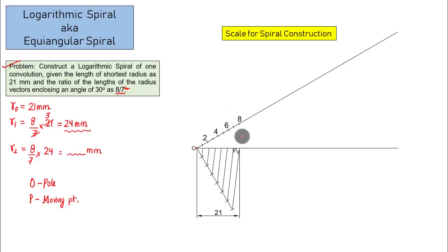Join P naught with this one. So this is one, two, three, four, five, six, seven, and eight. This automatically works out as how much? This is 24. This is the initial vector. And this was 21. And this is the just following vector. And this works out as 24. Automatically, if you measure this with the help of a scale, it is automatically going to work out as 24.